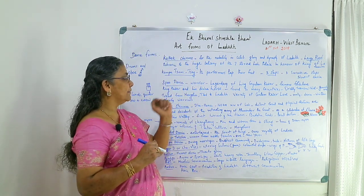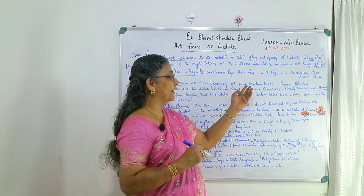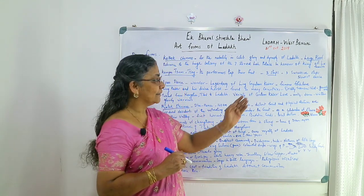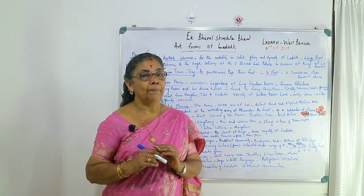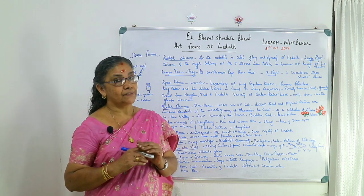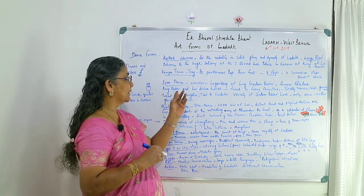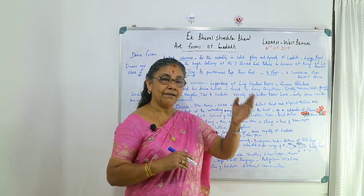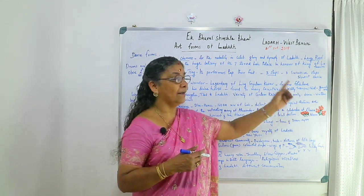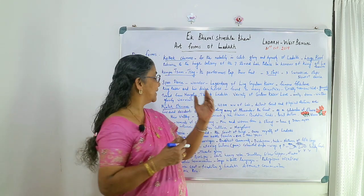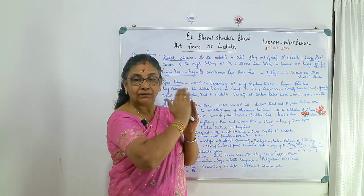Then comes Spao dance — it is a warrior dance. It is based on the legendary epic of Lingyalam Kesar, a famous folklore. Like the Mahabharata in India, it is a type of epic of Central Asia. King Kesar and his divine host are the main characters. This story has been found across many countries and many centuries, and it has been traced from Mongolia and Tibet to Ladakh.